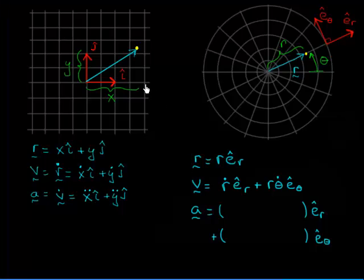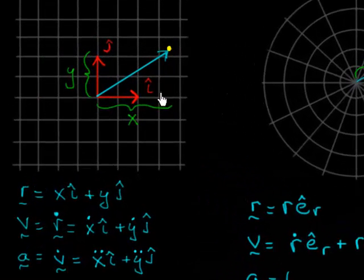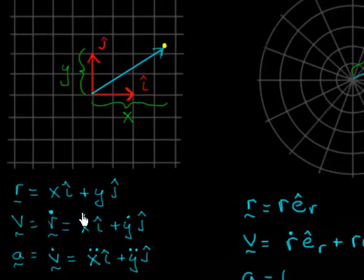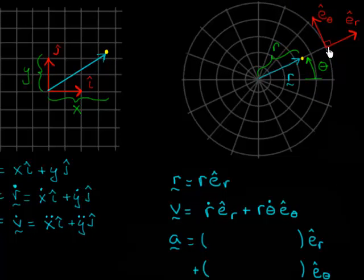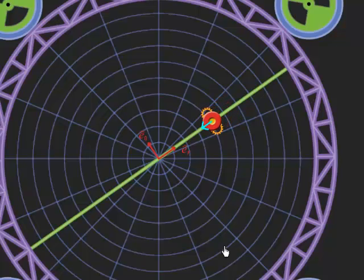Going back to my equations, let's suppose we had the same thing in Cartesian coordinates — something moving along a horizontal straight line. The velocity would just be x-dot in the i-hat direction, and the acceleration would be x-double-dot in the i-hat direction. Similarly, if we have something moving back and forth along a straight line in the radial direction, the velocity would be r-dot in the e-hat-r direction, and the acceleration would be r-double-dot in the e-hat-r direction. That is our first term of the acceleration, arising from purely radial motion.